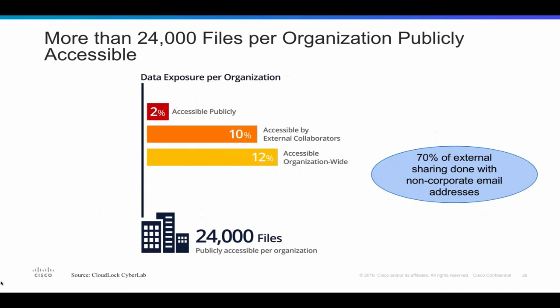We've seen that over 24,000 files per organization are publicly accessible. In cloud applications — particularly enterprise file sync and share applications like Box and Dropbox — it's so easy for users to share with external parties, whether partners or personal accounts, and also to make files not only externally accessible but publicly accessible. In G Suite, for instance, you can make a file publicly accessible where it's actually indexable by Google. Malicious parties have actually taken to search engines to discover sensitive information exposed by organizations through cloud applications.